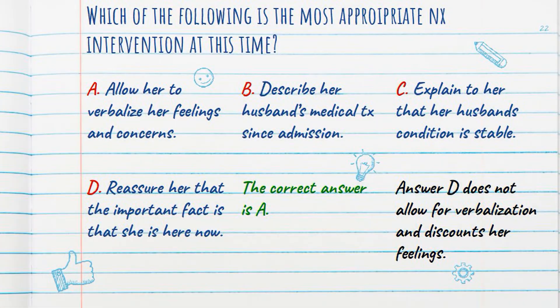What intervention in the list of multiple choice answers is most appropriate? Let's read the choices. A: Allow her to verbalize her feelings and concerns. B: Describe her husband's medical treatment since admission. C: Explain her husband's condition is stable. Or D: Reassure her that the important fact is that she is here now.